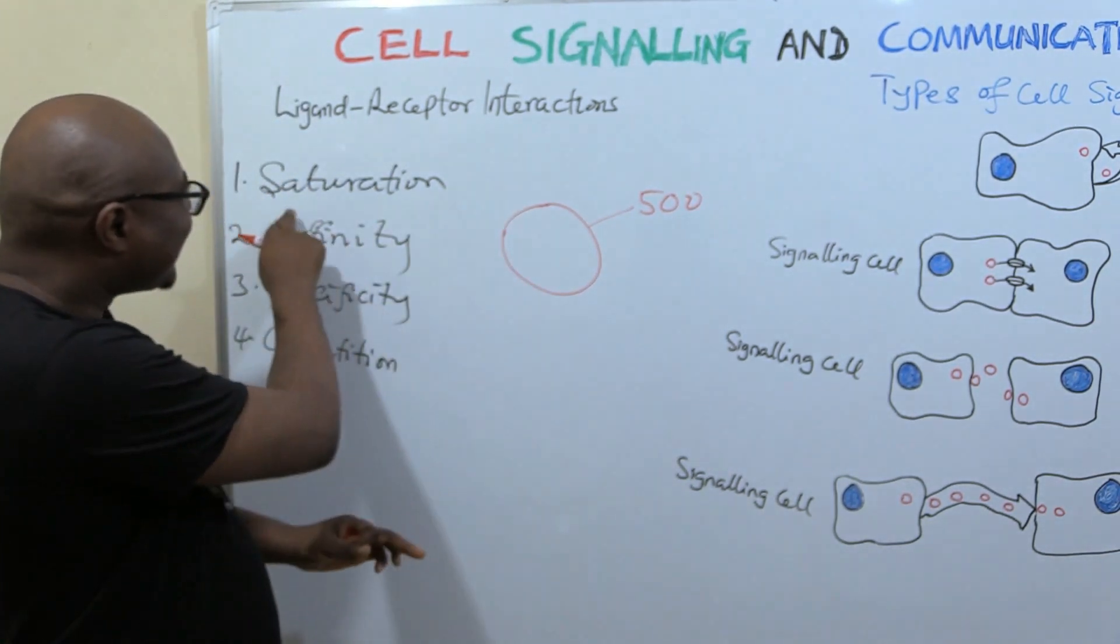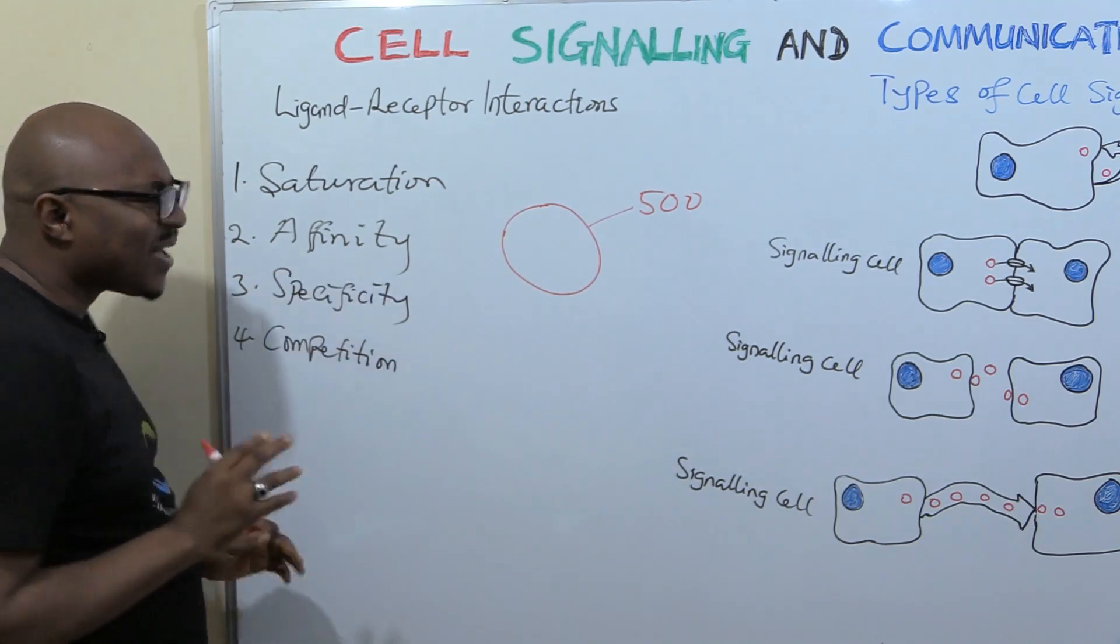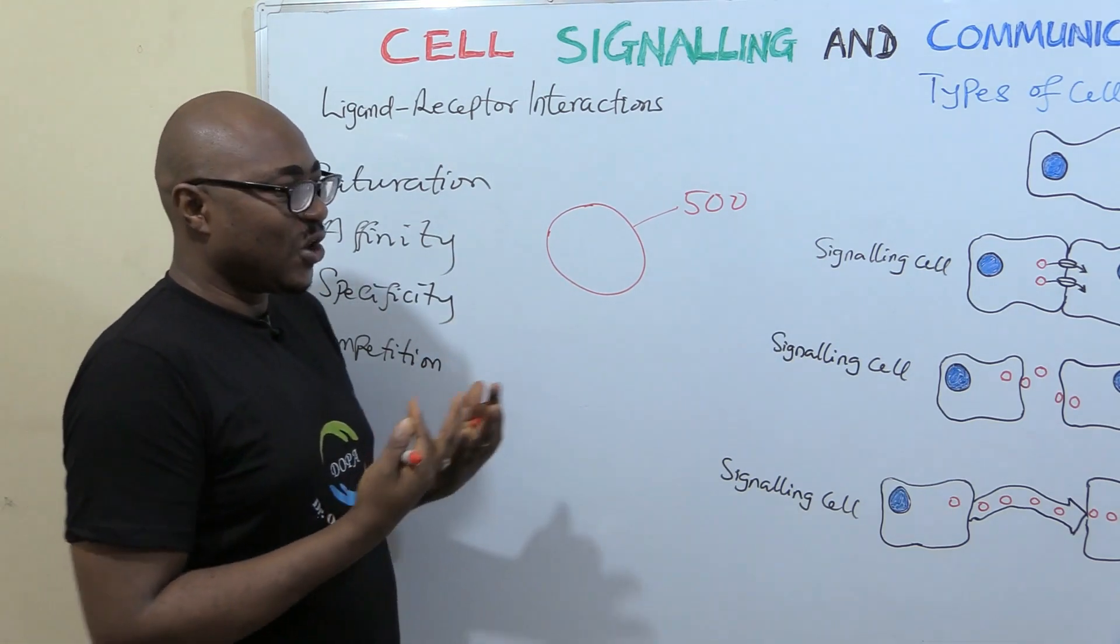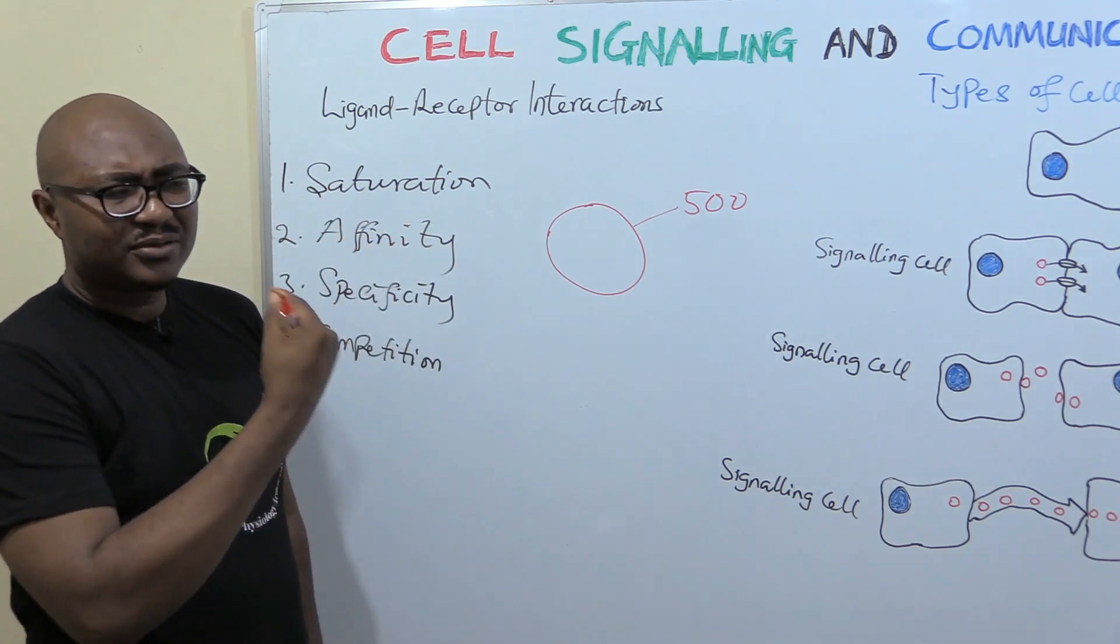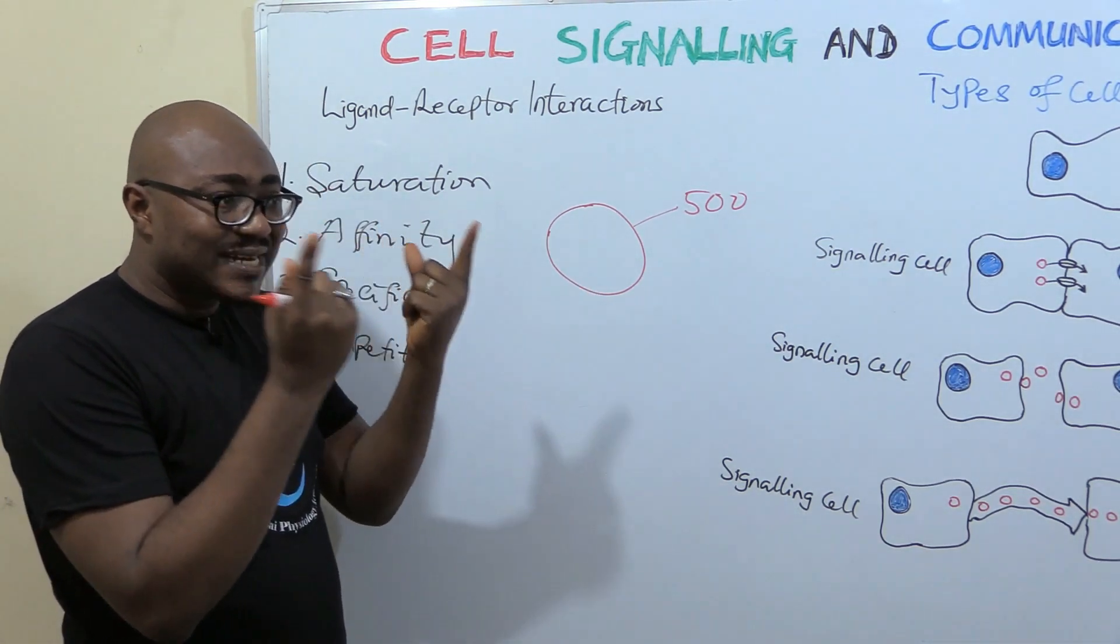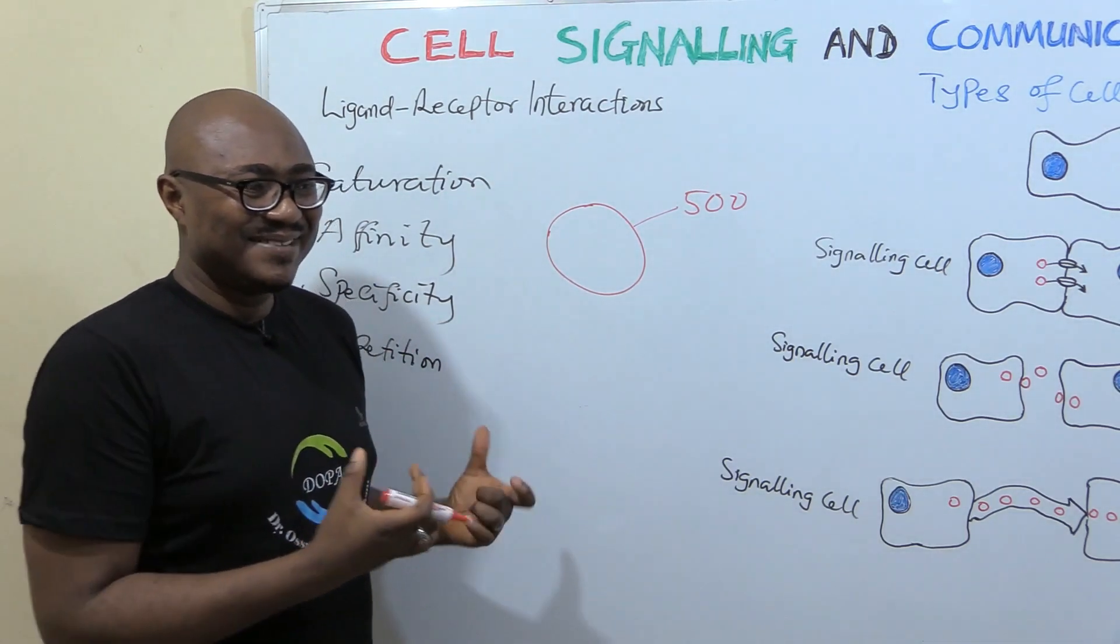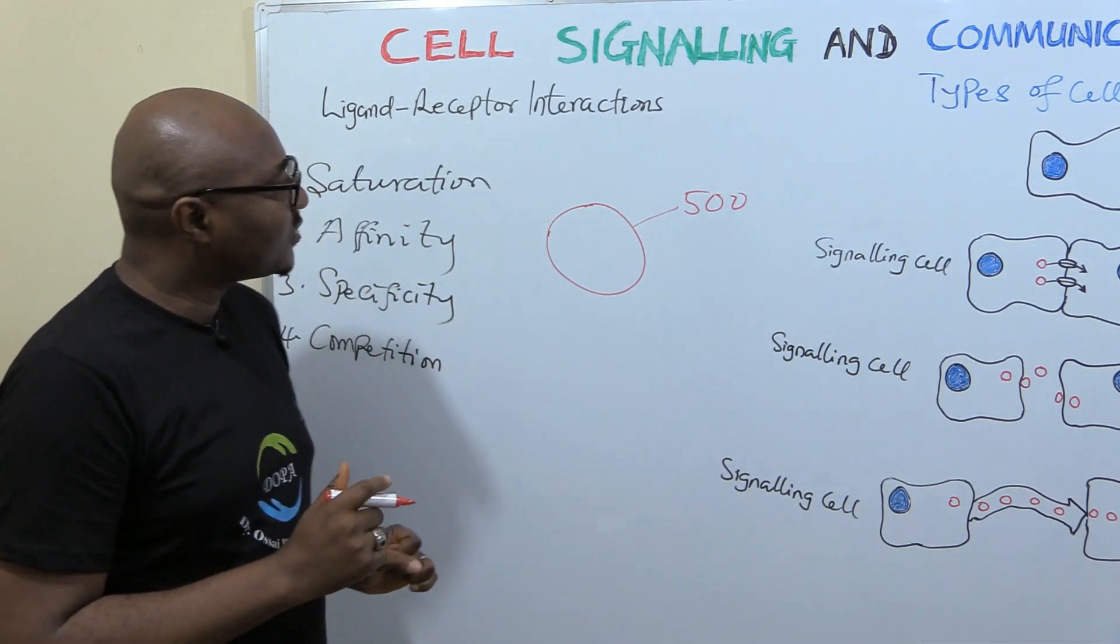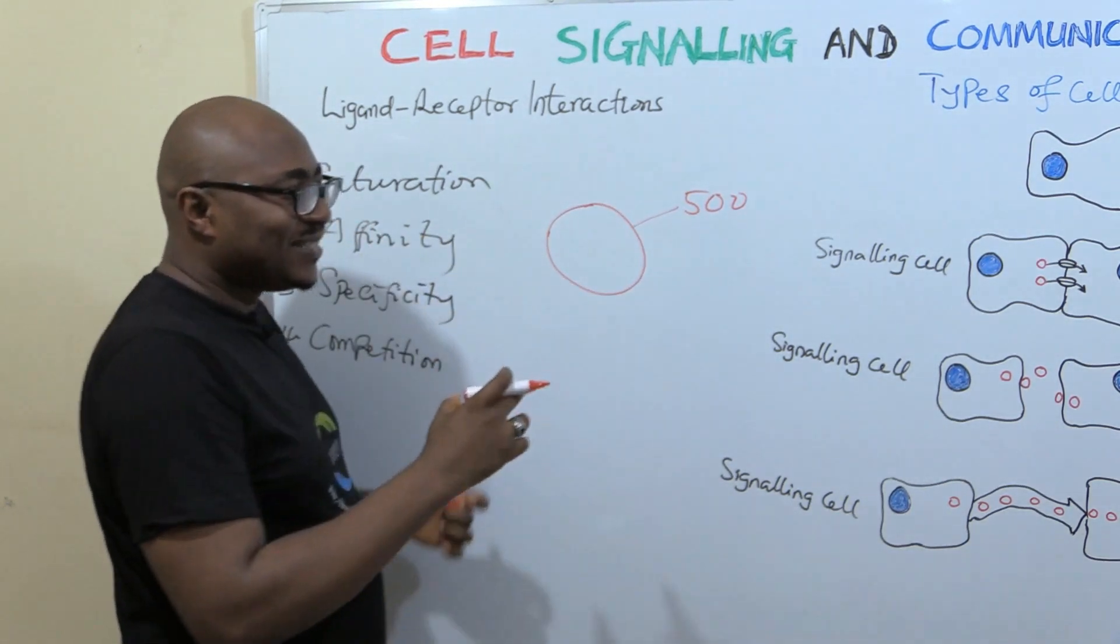Even if you keep pumping in more and more ligands, it will not increase the response once it's saturated. But before it is saturated, the more the ligand, the more the response. When it's saturated, even if you keep bringing more ligands, it exhibits this saturation kinetics. The next one is affinity. Affinity has to do with the ease, the love the ligand has for the receptor.